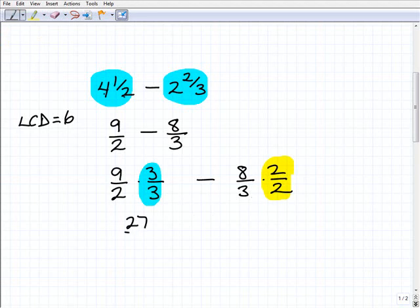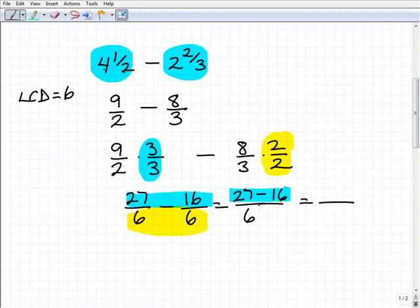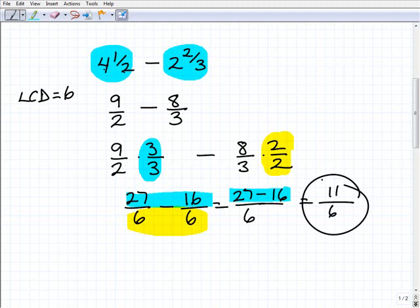So this would be 27 over 6 minus 16 over 6. And now what I've done is create a situation where I have the same denominator. That's 6. And then it's just going to be simply 27 minus 16. I'm going to subtract the numerators, right? Hopefully I'm not going too fast for you. I just have a short amount of time to try to teach you this stuff here. This would be 11 over 6. Now that's basically it.